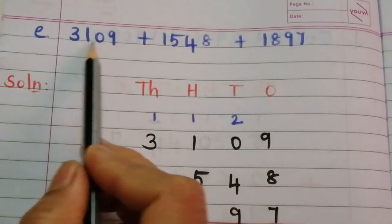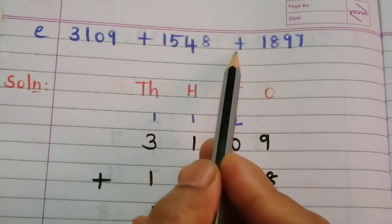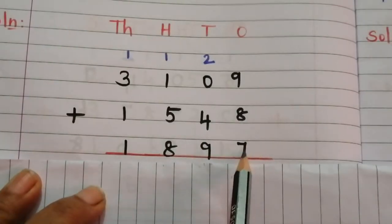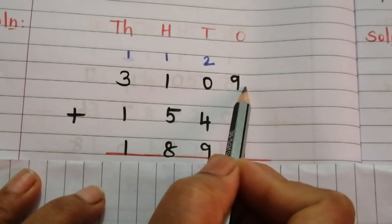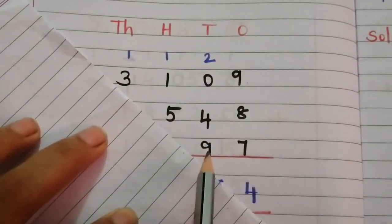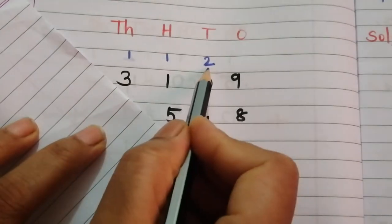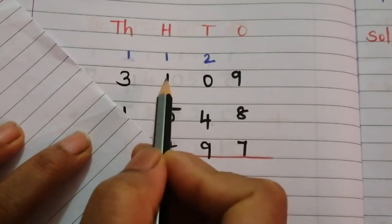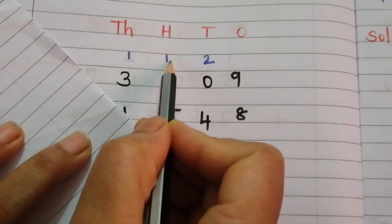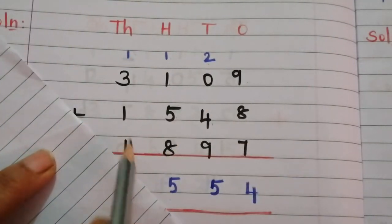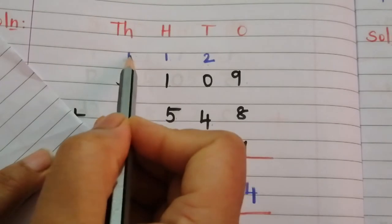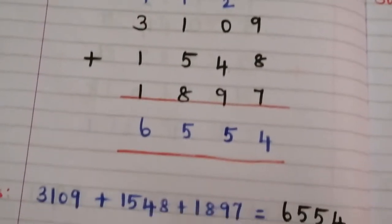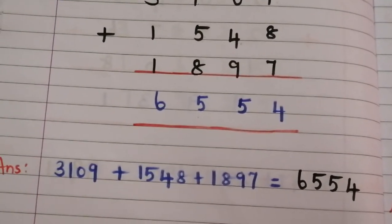Problem E: 3,109 plus 1,548 plus 1,897. Ones: 8 plus 7 is 15, 15 plus 9 is 24 — put 4, carry 2. Tens: 9 plus 4 is 13, 13 plus 2 is 15 — put 5, carry 1. Hundreds: 8 plus 5 is 13, 13 plus 1 is 14, 14 plus 1 is 15 — put 5, carry 1. Thousands: 1 plus 1 is 2, 2 plus 3 is 5, 5 plus 1 is 6. The answer is 6,554.